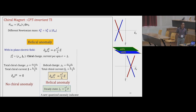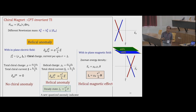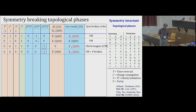Similarly, applying an in-plane magnetic field produces a Zeeman splitting of the two states. If you calculate the current, there will be a current proportional to the magnetic field in the same direction as the field — similar to the chiral magnetic effect. One can expect here a helical magnetic effect.